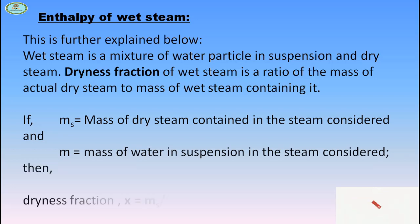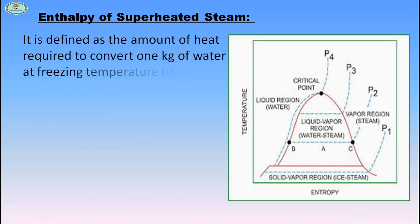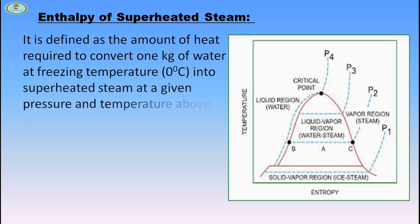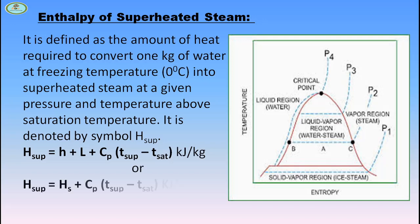Enthalpy of superheated steam is defined as the amount of heat required to convert 1 kg of water at freezing temperature into superheated steam at a given pressure and temperature above saturation temperature. It is denoted by the symbol H_sup. Thus, H_sup = H + L + Cp·(T_sup − T_sat) kJ/kg, or equivalently, H_sup = Hs + Cp·(T_sup − T_sat).